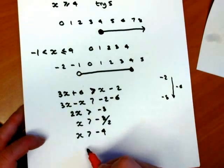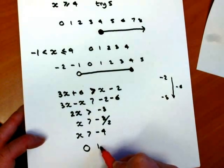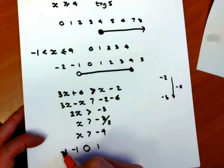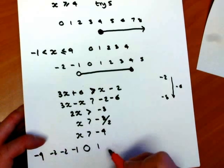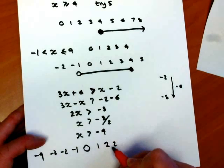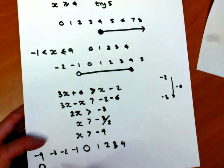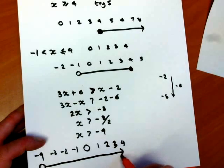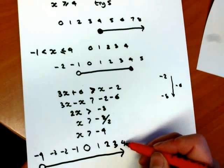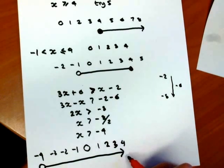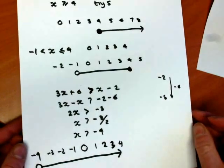I want to show this on a number line. 0, 1, minus 1, minus 2, minus 3, minus 4. Go to minus 4. You're not allowed to be equal to it, so keep the circle open and draw the inequality. It doesn't really matter where you stop, as long as you have an arrow saying it just continues. Then that will be fine.